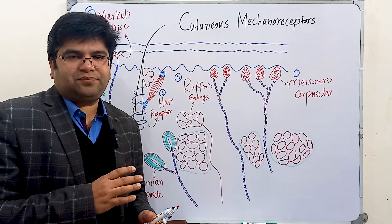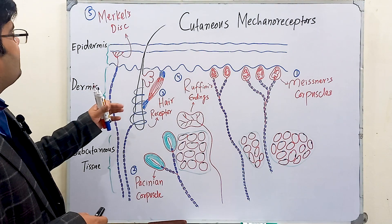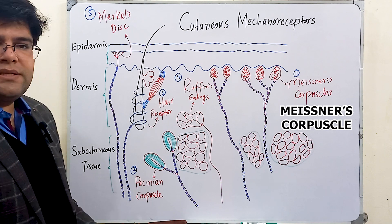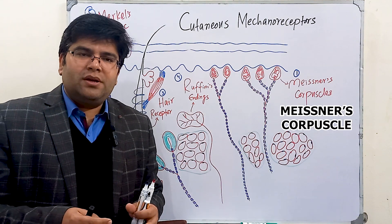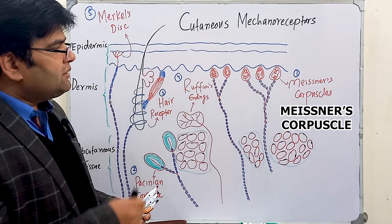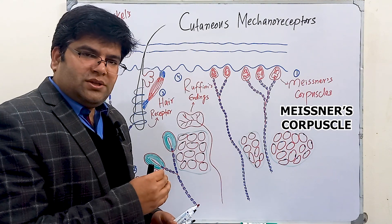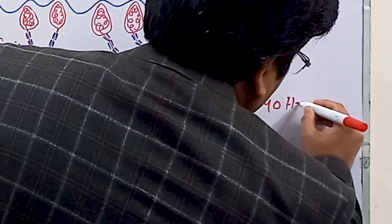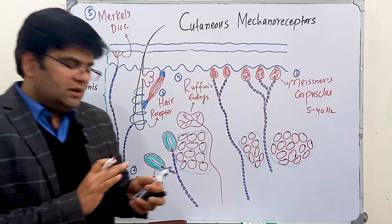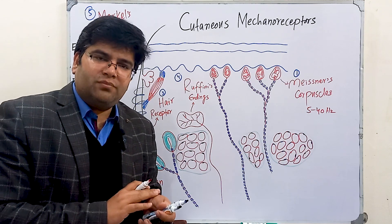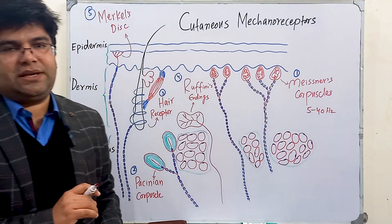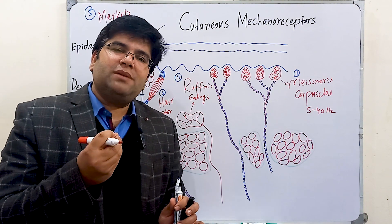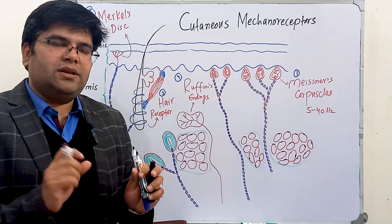Let's begin with the first receptor: Meissner's corpuscle. Meissner's corpuscle is an encapsulated receptor present in our dermis. They detect vibrations, and the frequency of vibration detected by Meissner's corpuscle is 5 to 40 Hz. They detect tap and flutter from the skin. These are present in non-hairy skin like the skin of our palms, soles, and lips, and are especially more abundant in the fingertips and lips.